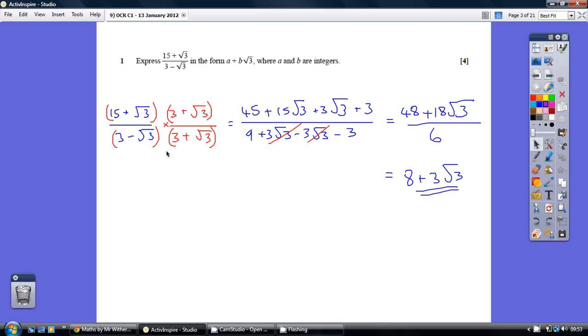And similar on the bottom. Because we've had this change of sign, that means that the two square root terms in the denominator cancel out, which is the whole point. So, 9 minus 3 equals 6 on the denominator.